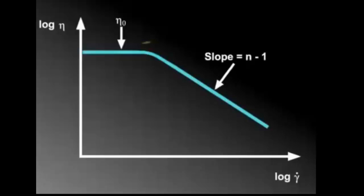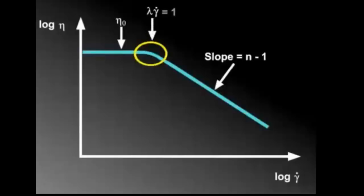The transition from the constant viscosity plateau to the shear-thinning curve occurs where lambda times the shear rate is equal to 1.